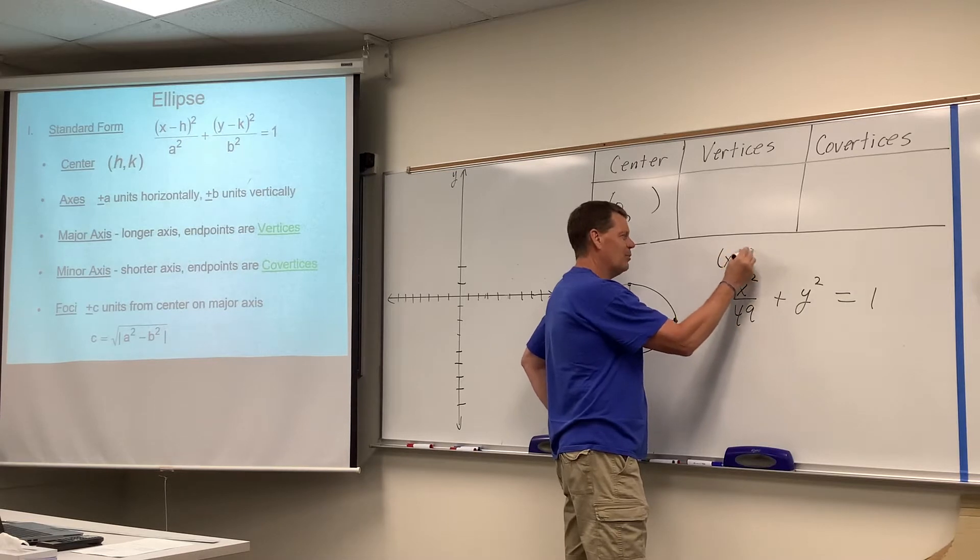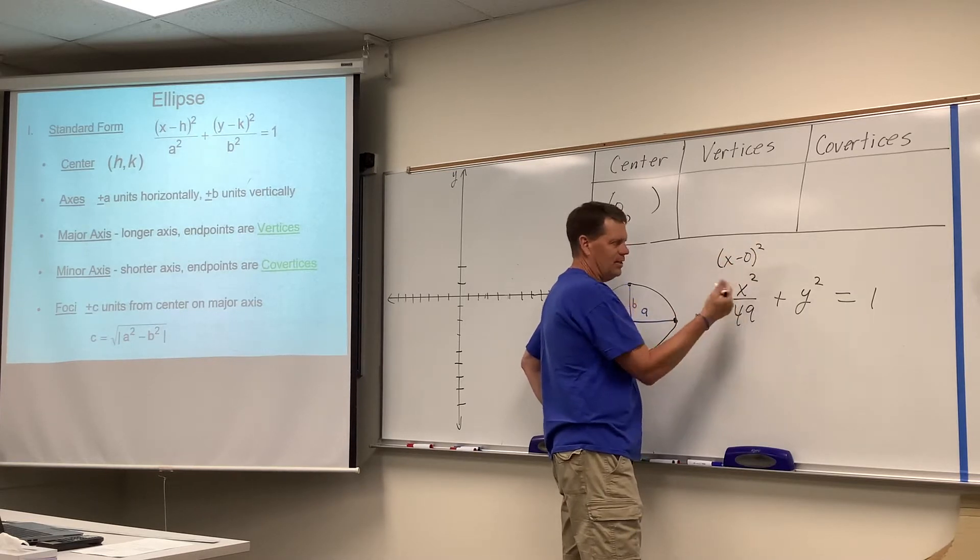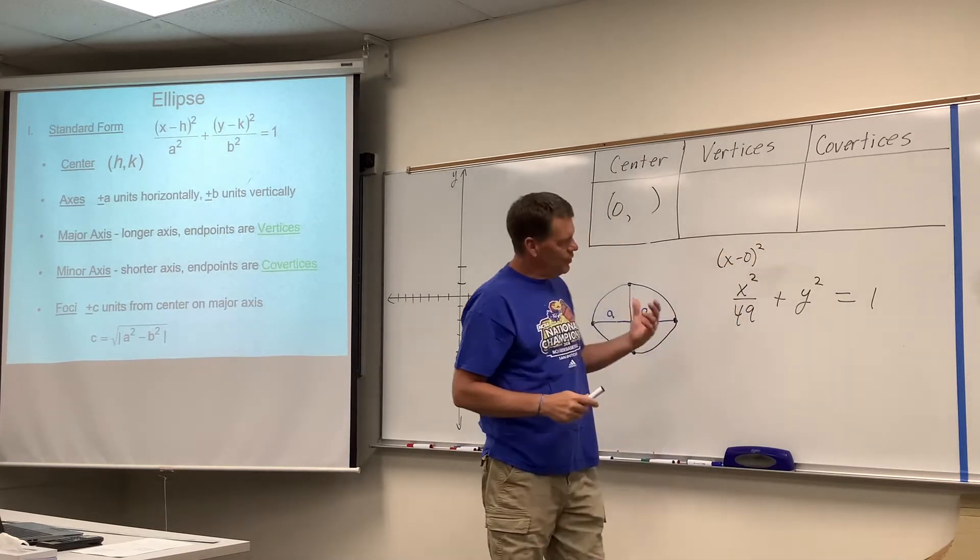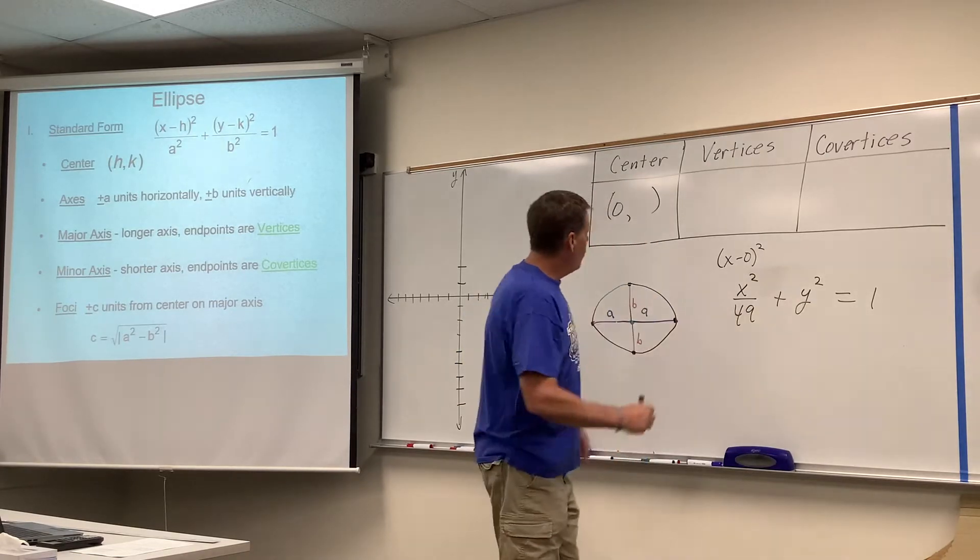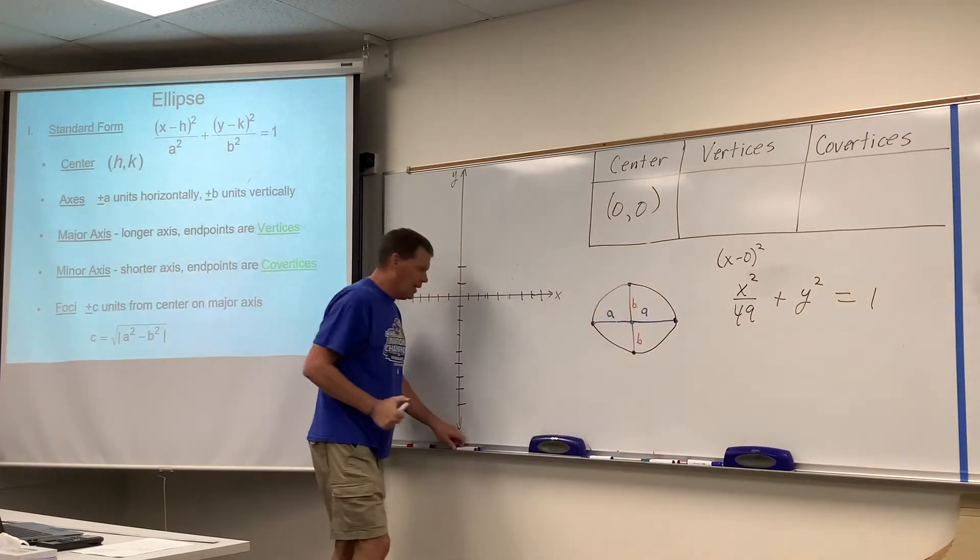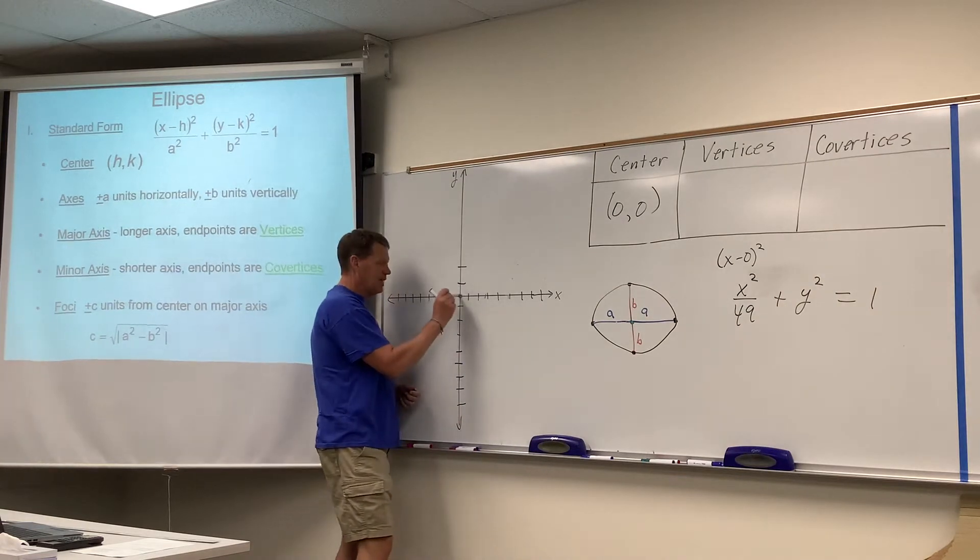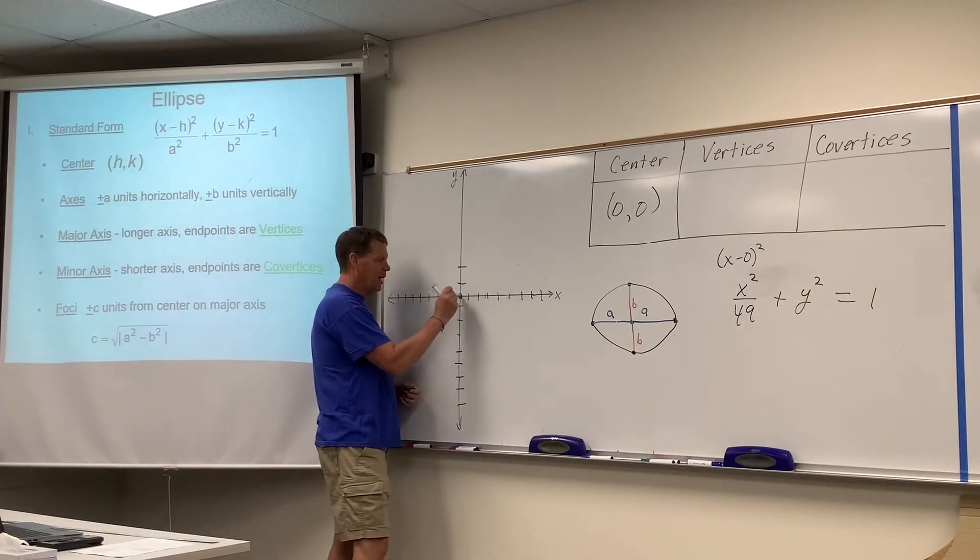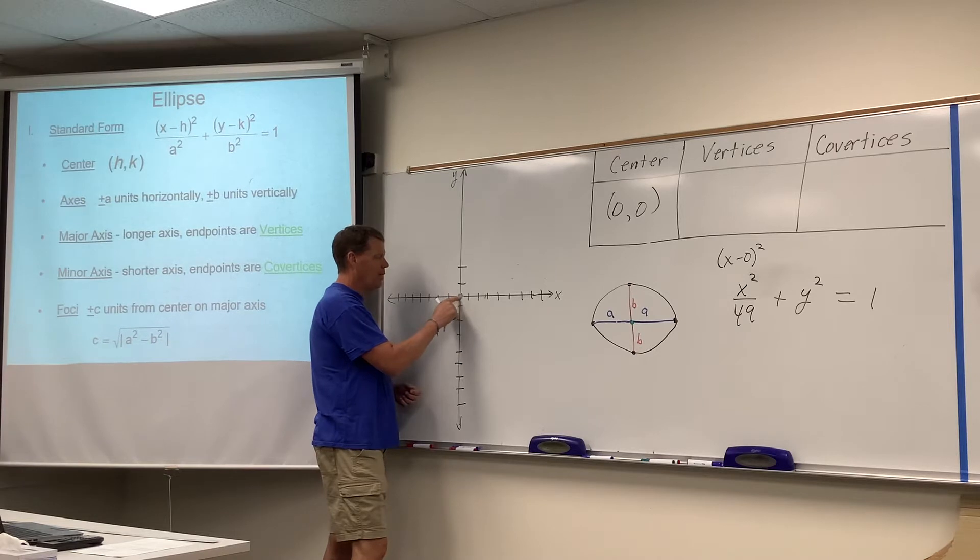You could put x minus zero parentheses squared there. It's the same thing, isn't it? So, it's zero. Similarly, y would be zero. So, it looks like that center point is zero, zero, which you might remember math nerds call the origin.